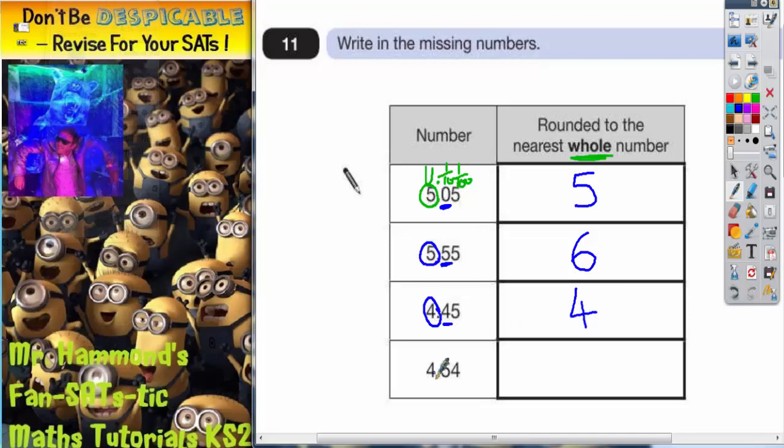And then looking to this last one, again this is the number we want to round, our whole number. We look at the next number to help us decide. Because it's 5, that means we round up, so this becomes 5. So we've got our answers here.